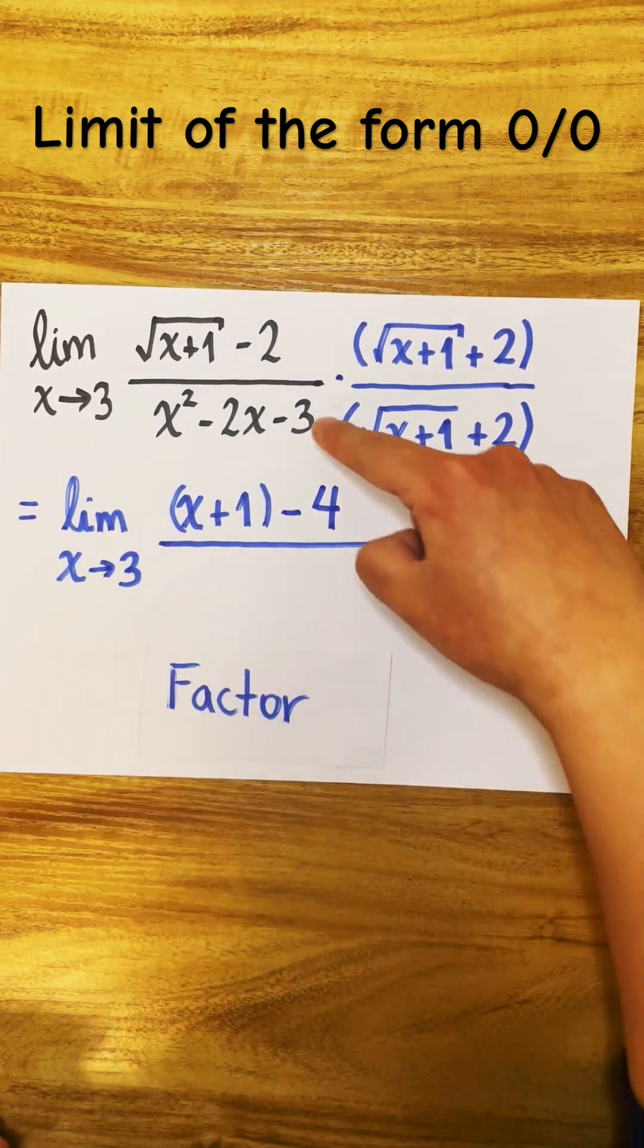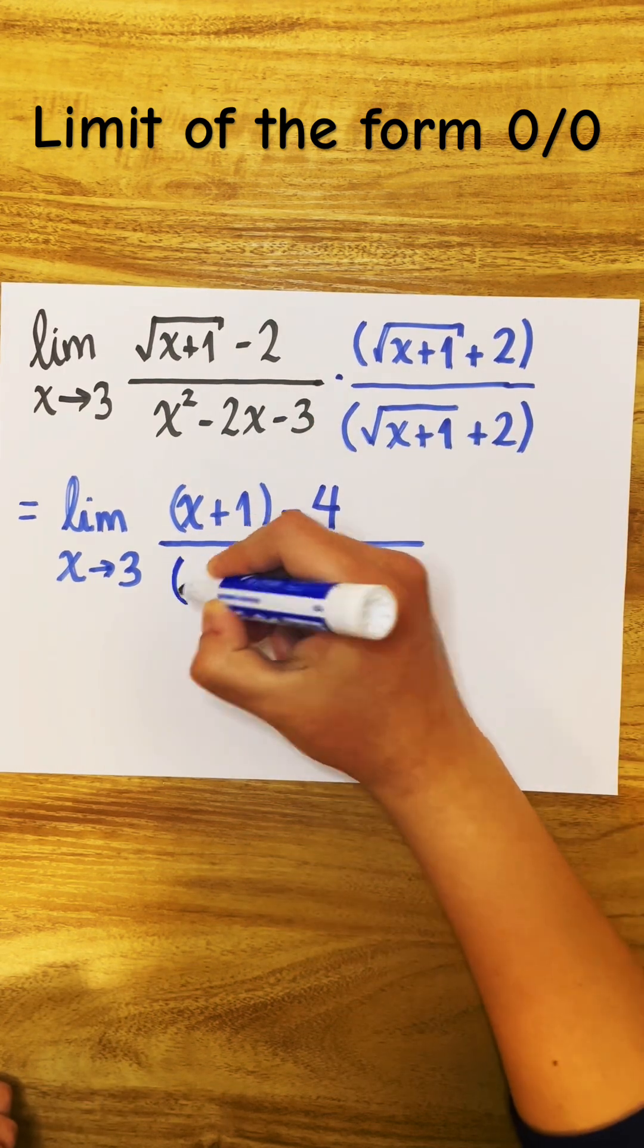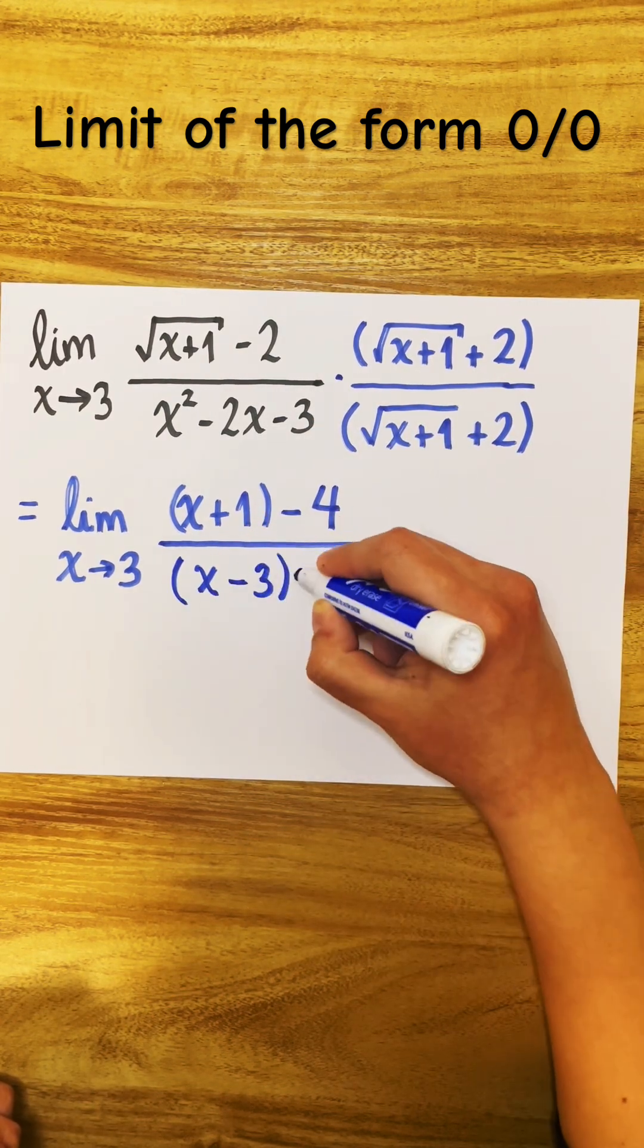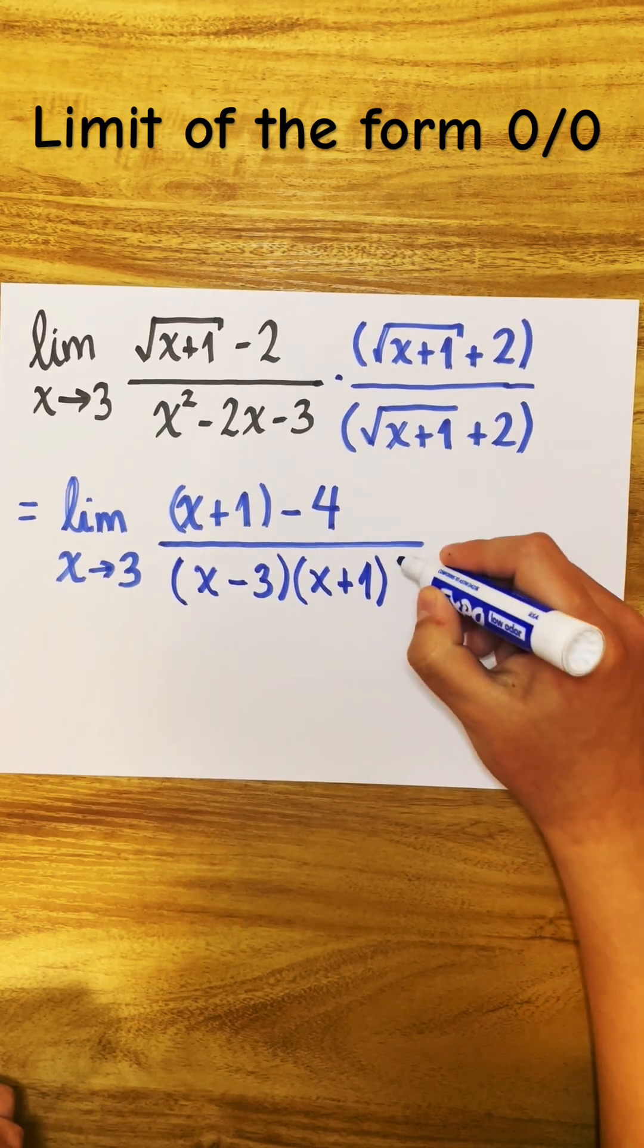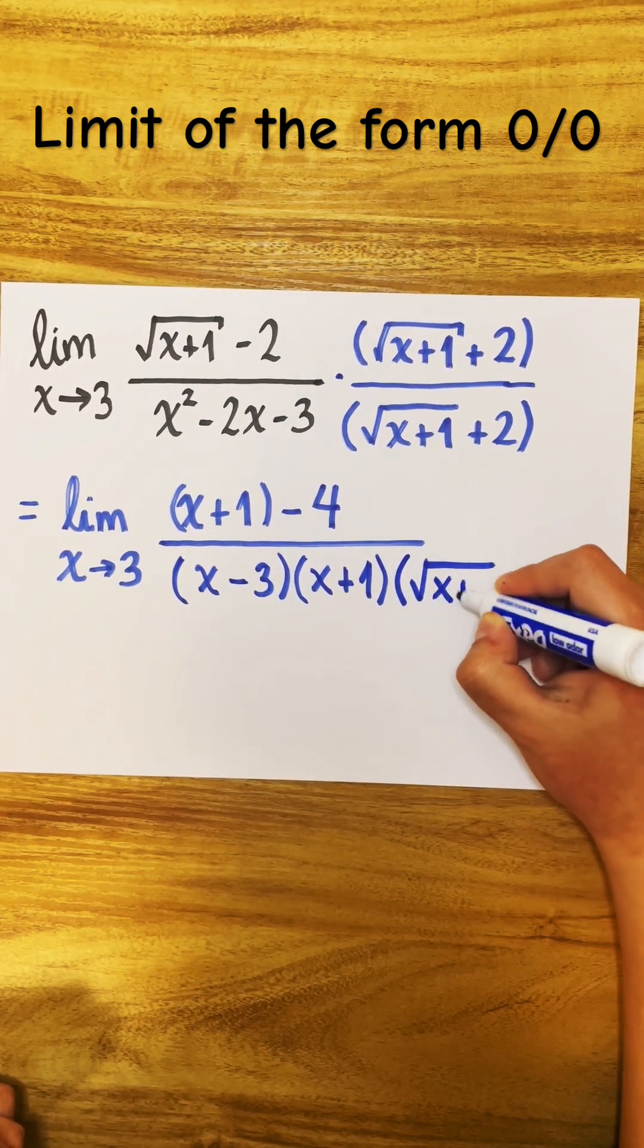On the bottom, we factor x squared minus 2x minus 3 as x minus 3 times x plus 1. Now remember, we still have that factor, square root of x plus 1 plus 2, so we have to write it down.